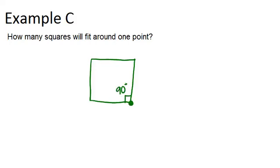So if this is our central point, the question is, how many squares will it take to fill that up? Well, around the whole point is 360 degrees. And 360 divided by 90 is 4. So that means it will take four squares to fit around one point.